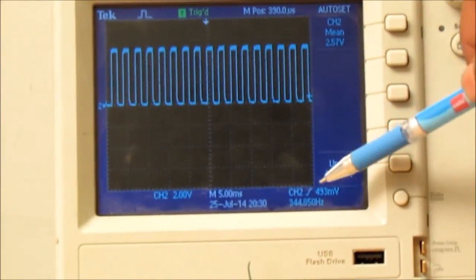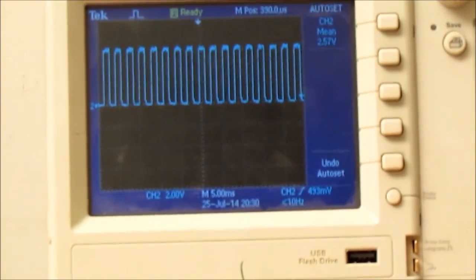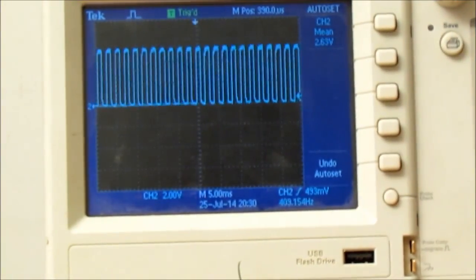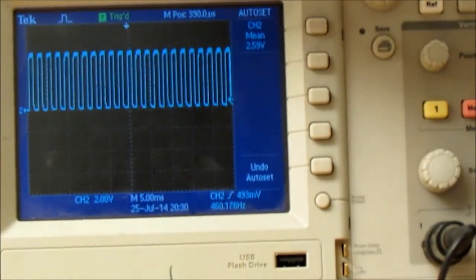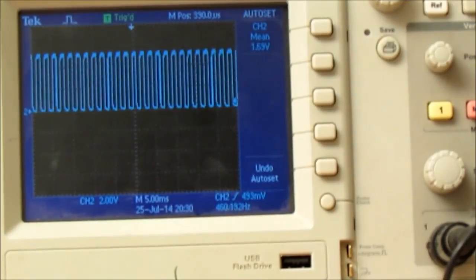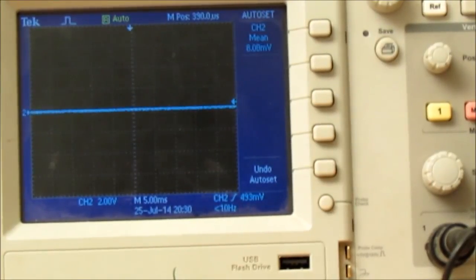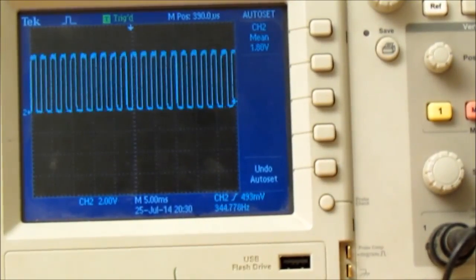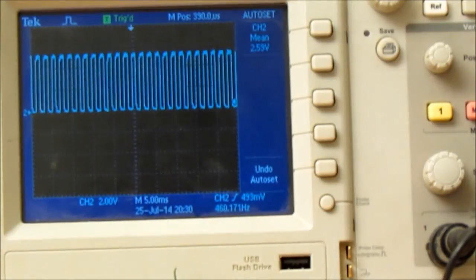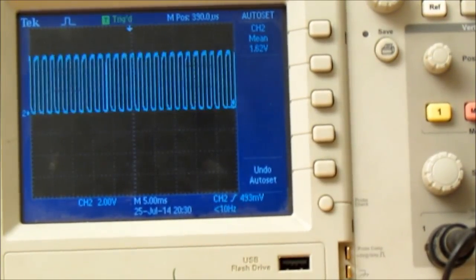Then ma, then pa. So you can see the difference in the frequency, so it is 460 now. Then ma, ga, ni, and sa. So I will show you all the waveforms: sa, re, ga, ma, pa, dha, ni, sa, and sa, ni, dha, pa, ma, ga, re, and sa.